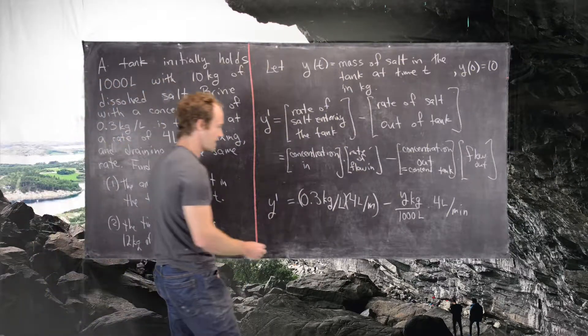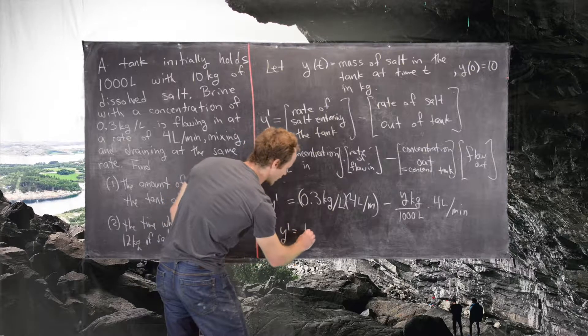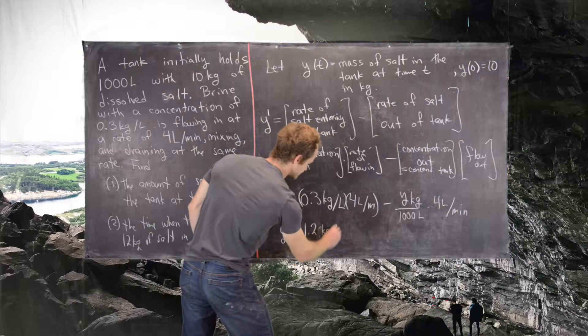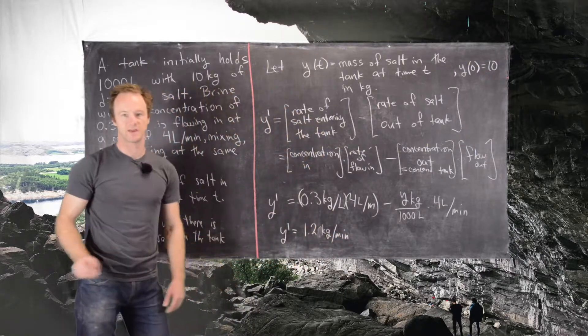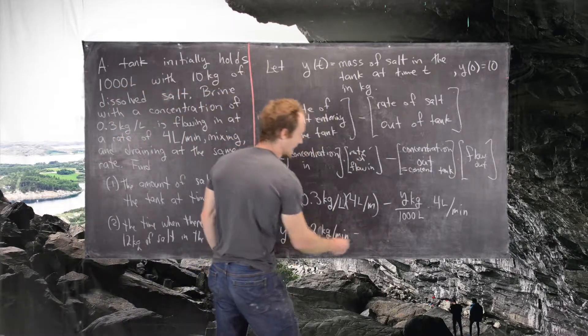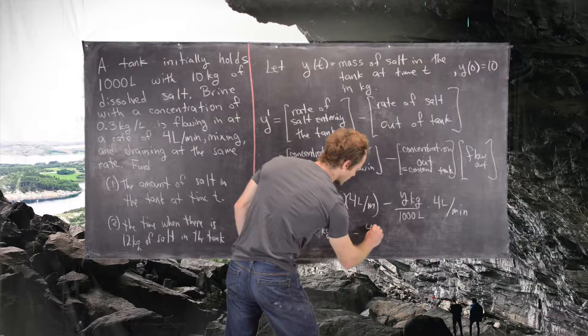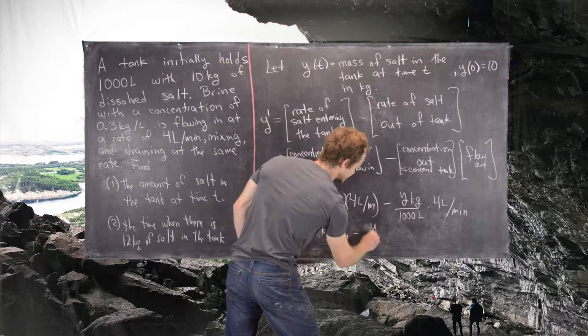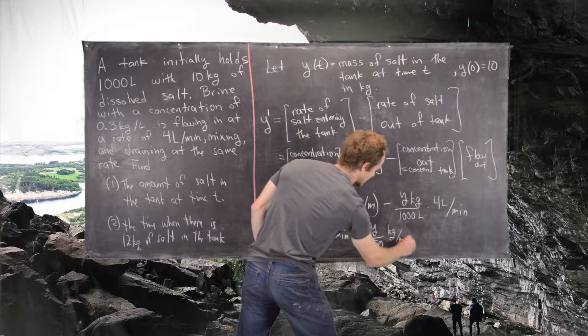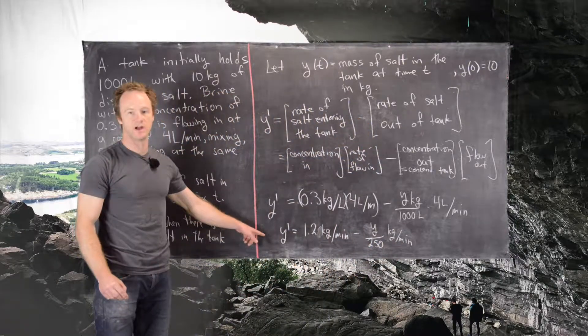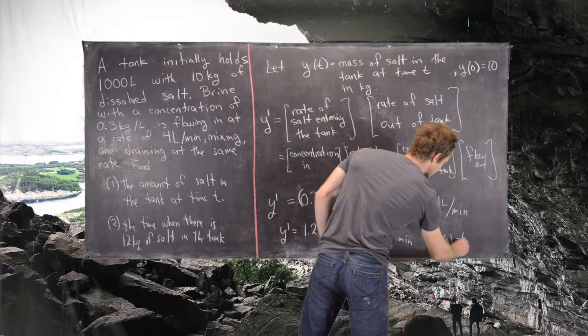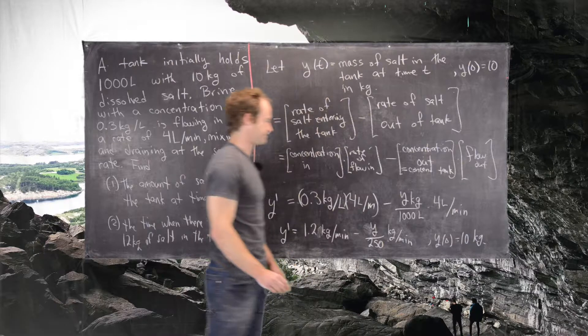So now y prime is equal to 1.2 kilograms per minute, that's how fast the salt is coming into the tank, minus 4y over 1,000, which is the same thing as y over 250, kilograms per minute out. There's our differential equation. Let's recall that we have this initial condition, y of 0 equals 10 kilograms.